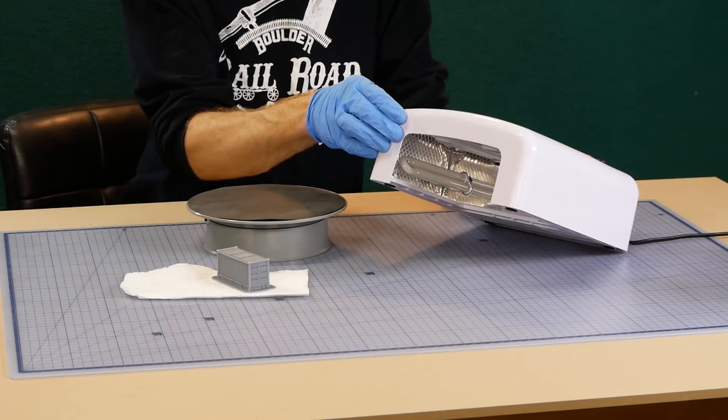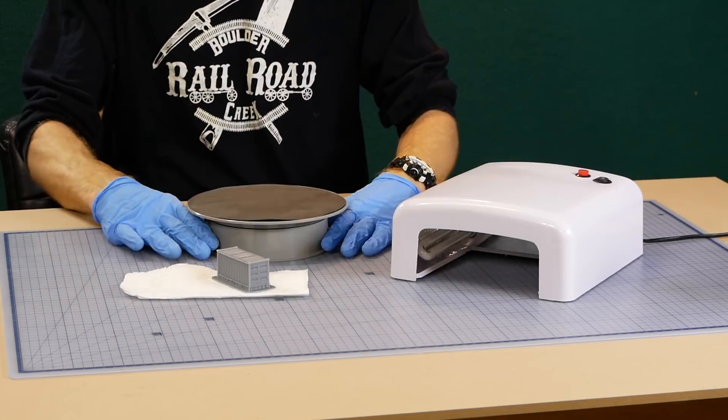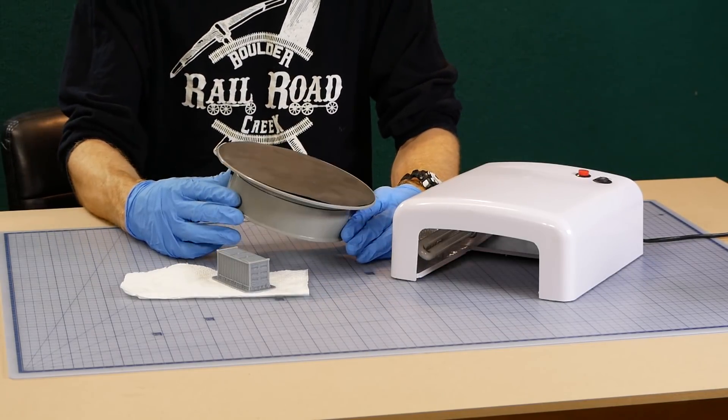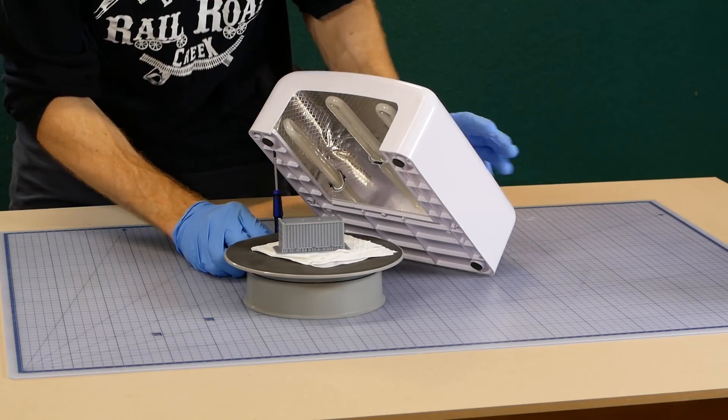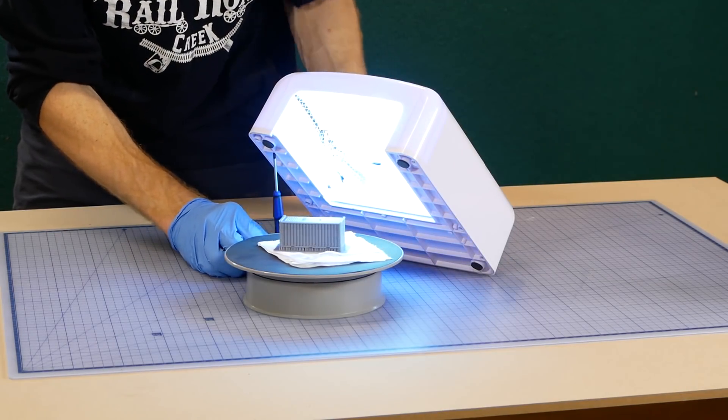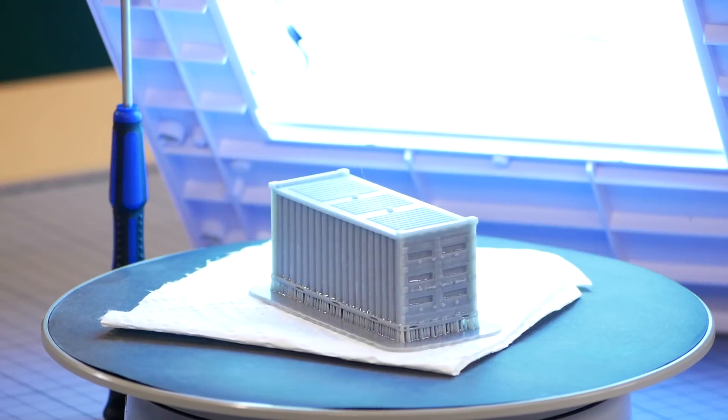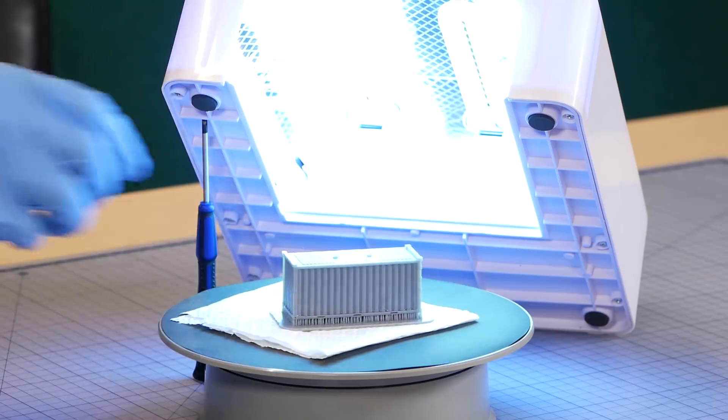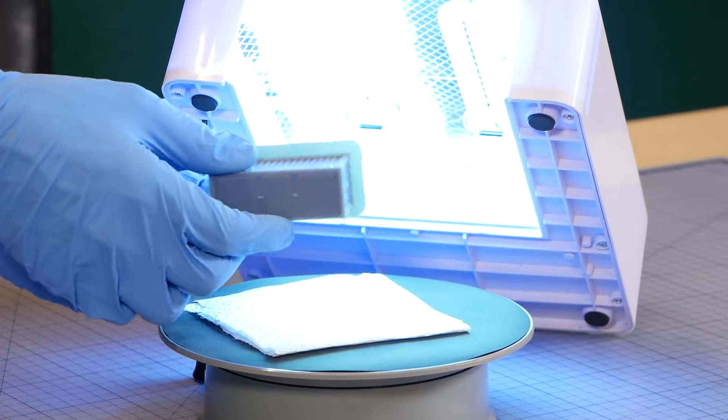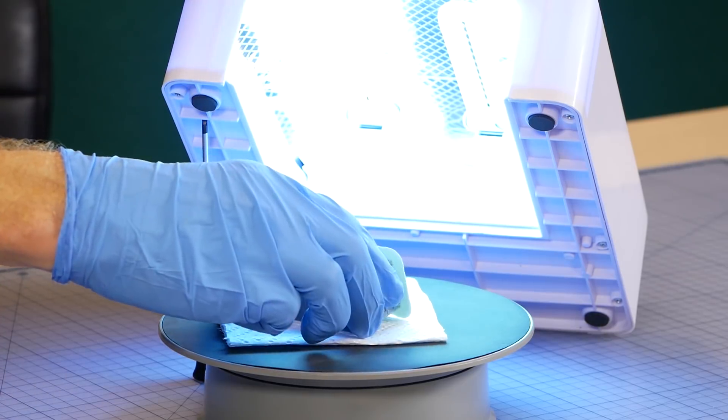To post cure the model I place it under a UV lamp. The spinning display stand is optional however I find it gives the model a more even final cure. You can also place the model out in the sun. I also rotate the model after about 10 minutes to make sure all sides are thoroughly cured.